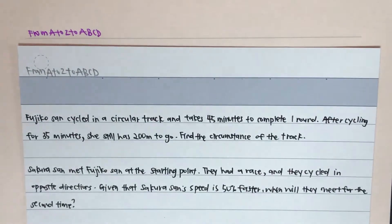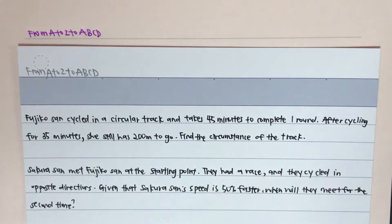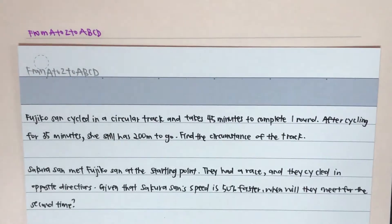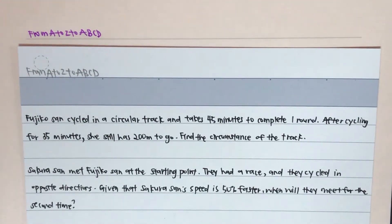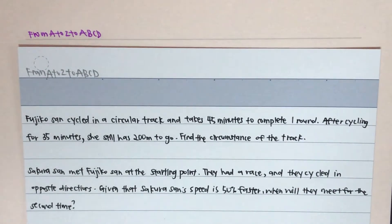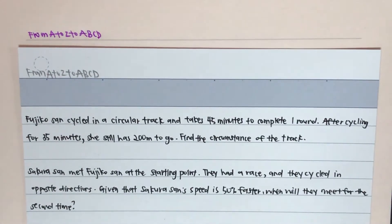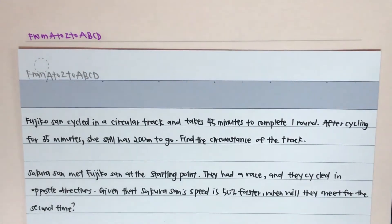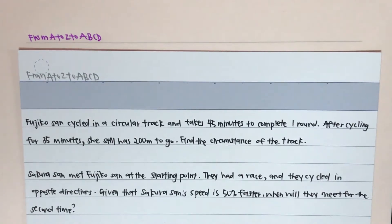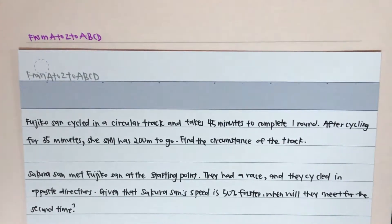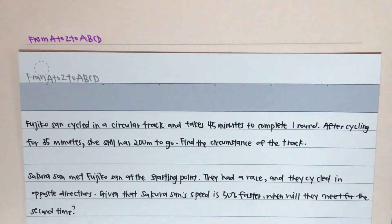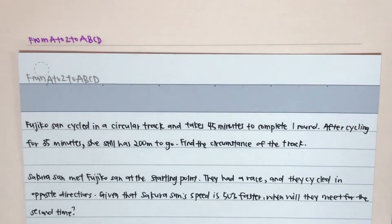Now, let's get started. Fujiko-san cycled in a circular track and takes 45 minutes to complete one round. After cycling for 35 minutes, she still has 200m to go. Find the circumference of the track. Sakura-san met Fujiko-san at a starting point. They had a race and they cycled in opposite directions. Given that Sakura-san's speed is 50% faster, when will they meet for the second time?